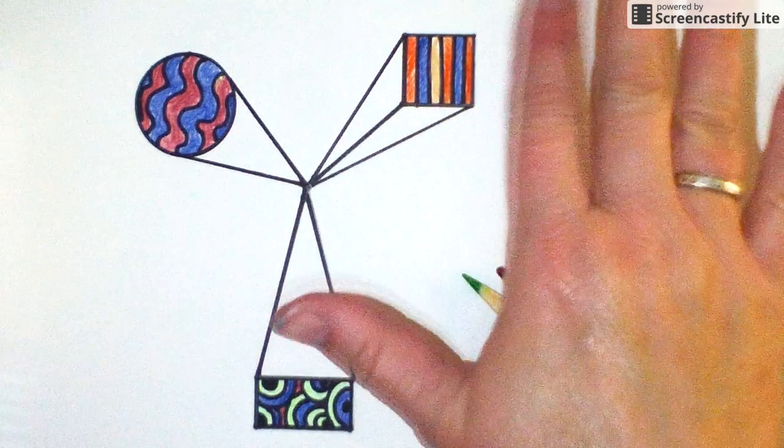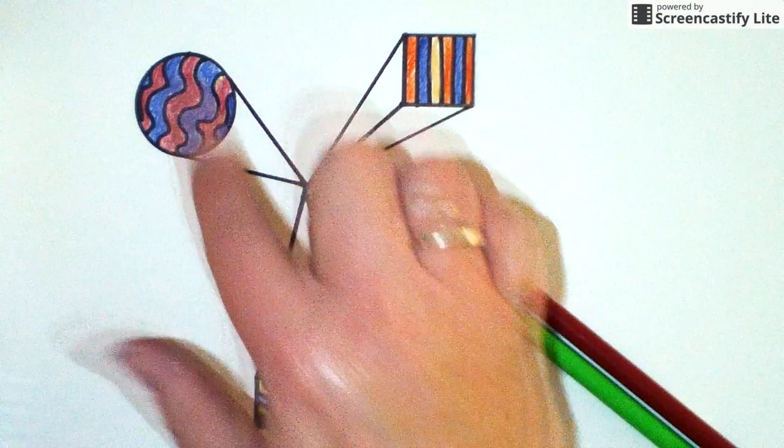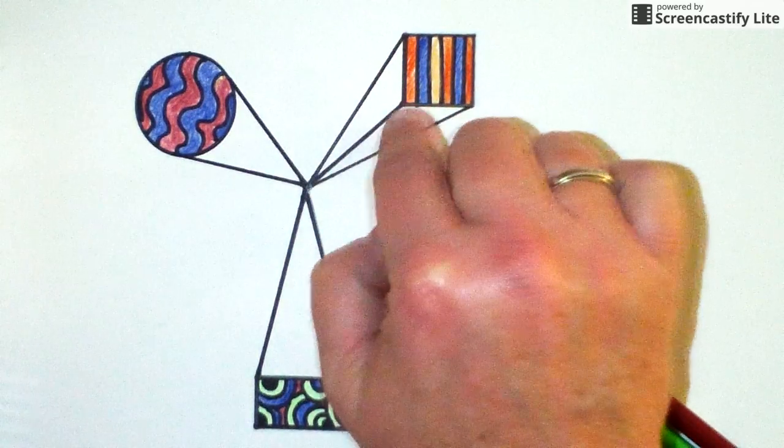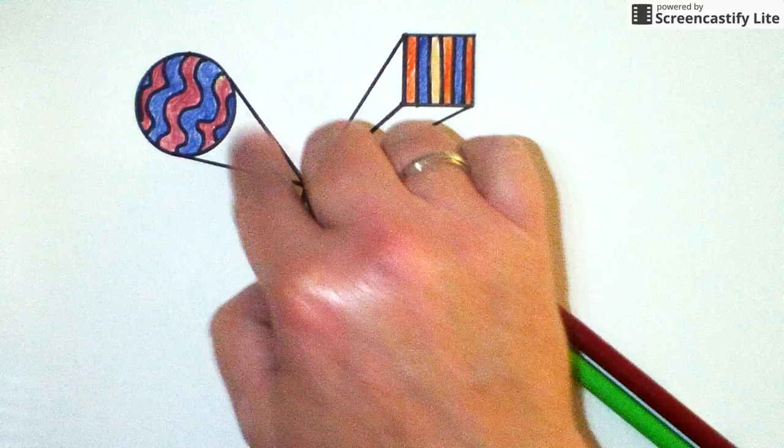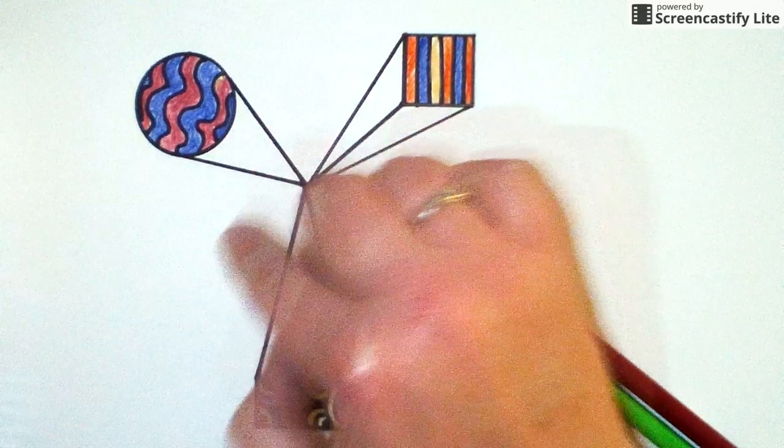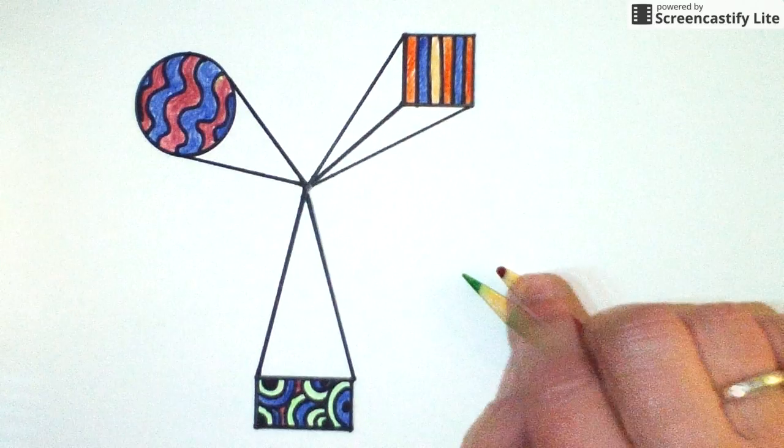Once you have all of your shape faces designed and colored in, then you need to stop and you're going to need to talk to Mrs. Shoemaker, talk to me about how you're going to do these sides. That next part is the shading part from light to dark or from dark to light, really the value part. So I'm going to do that in another video.